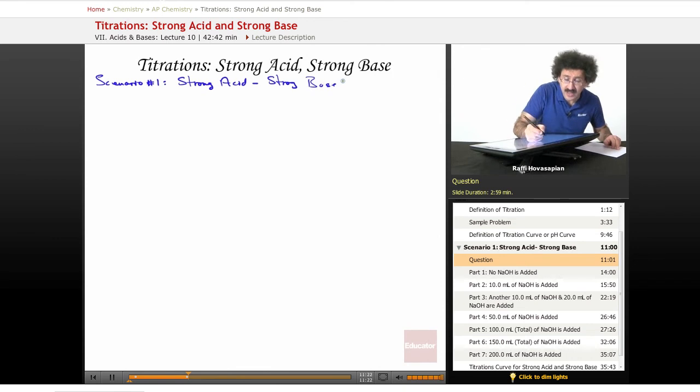What that means is that I have either a strong acid solution to which I'm adding strong base and discovering what the pH is along each addition, or it's the other way around. I have a strong base to which I'm adding a strong acid and, again, calculating the pH as we proceed along the titration.